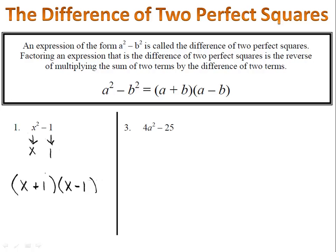Example 3 is a little more interesting, although not a whole lot. We have 4a squared as our first term. That is a perfect square. And we have 25 as our second term. We notice there is subtraction and so we look at the square root of each of those terms. The square root of 4a squared is 2a. The square root of 25 is 5.